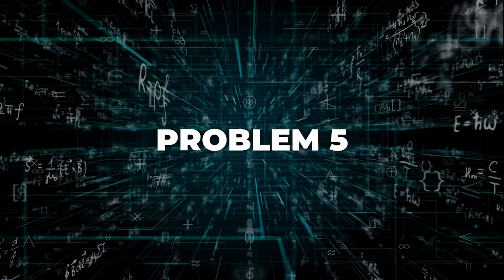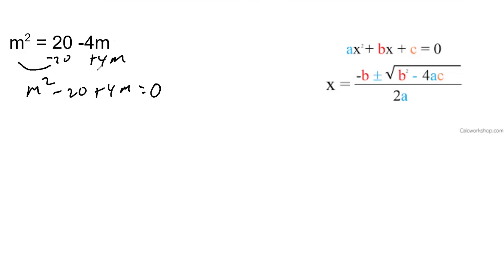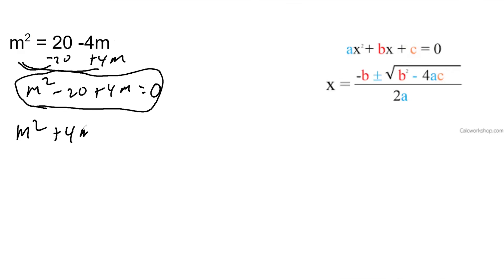Let's get a little bit weirder. Sometimes a problem will ask for m, and you've got to get it into the form of a quadratic equation first. I'm going to subtract 20 from both sides and add 4m to both sides, and I get m squared plus 4m minus 20 equals 0. You've got to get it in that standard form, so you don't confuse your a, b, and c.